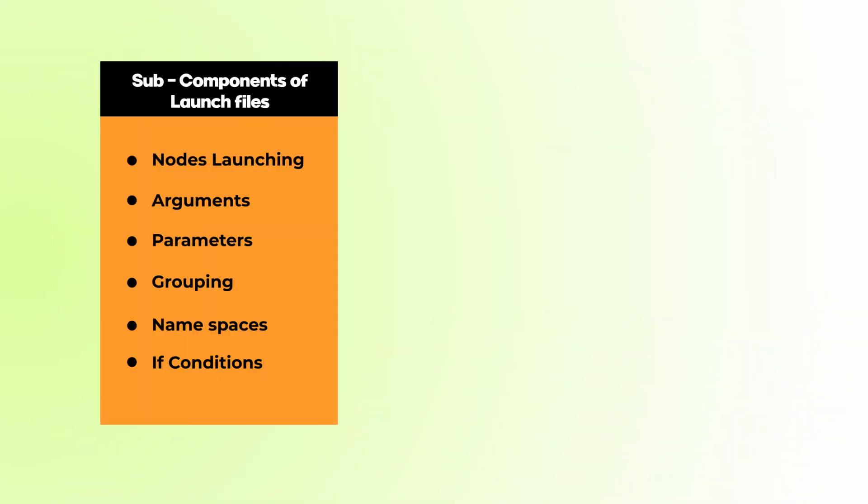After having a good understanding of nodes, launch files is the next important step. Launch files are a very important component of ROS — they are above nodes, and you have to be really good at them so you can understand big projects and packages of ROS. This video is going to go through each and every single thing inside of launch that is utilized in most cases. The sub-components of launch files are: nodes launching, including other launch files, arguments, parameters, grouping, namespaces, and if conditions.